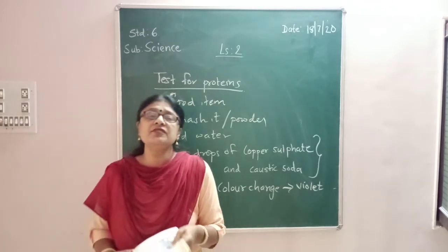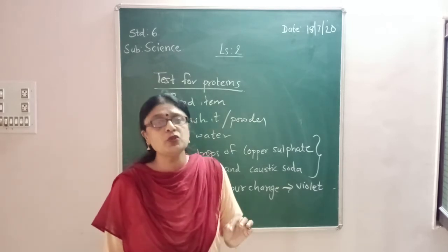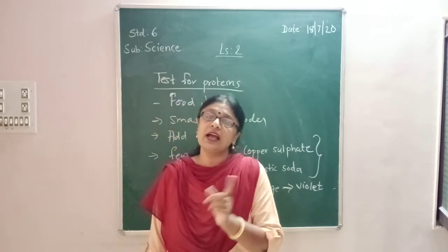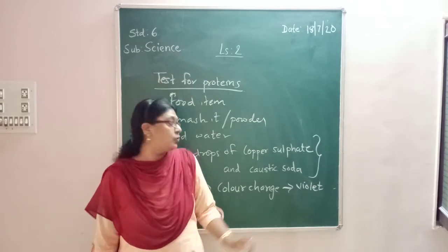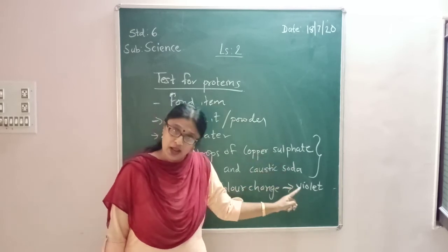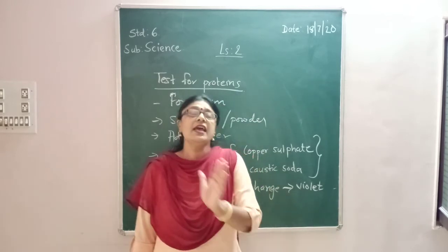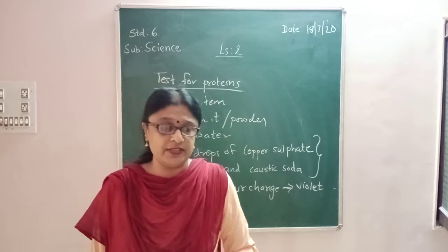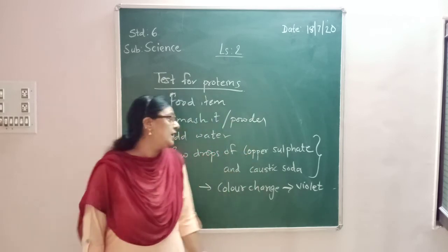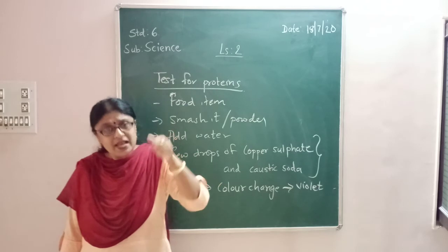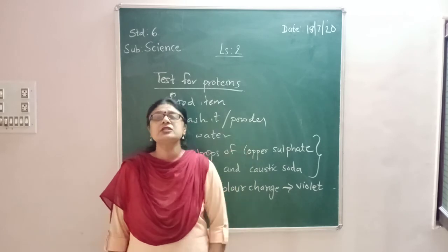Today we have seen the test for starch and the test for proteins. For the starch test, you put iodine solution and check whether the color changes to blue-black. For the protein test, you put a mixture of copper sulfate and caustic soda and observe the color change — if it turns violet, protein is present; if it doesn't change, no protein is present. Remember that whenever we test for the presence of any nutrient, the food should be in powder form first, so the solution can mix properly.